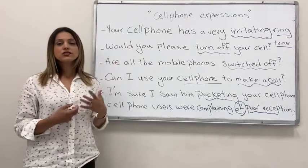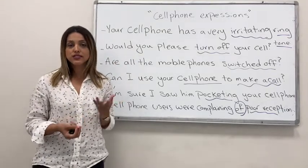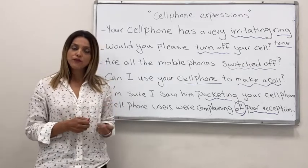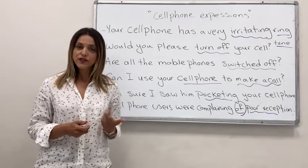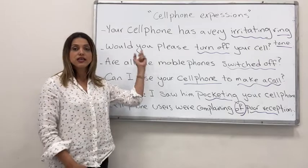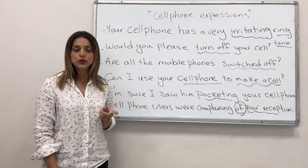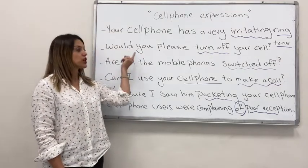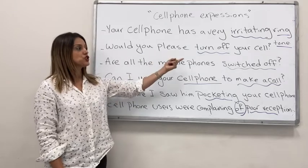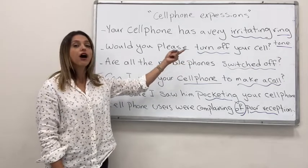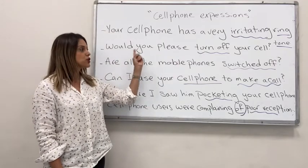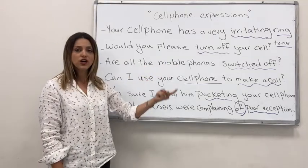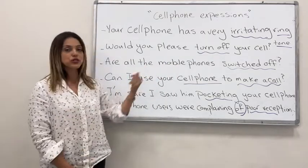Whenever you're in class, studying, at the library, or in an important meeting, you have to switch off or turn off your phone. So you say: 'Would you please turn off your phone?' Notice the pronunciation here — you don't say 'would you' separately; with the 'd' and 'y' together, you pronounce it as 'j': 'Would you.' So: 'Would you please turn off your phone?' The next expression: 'Are all the mobile phones switched off?' — meaning are they all turned off.